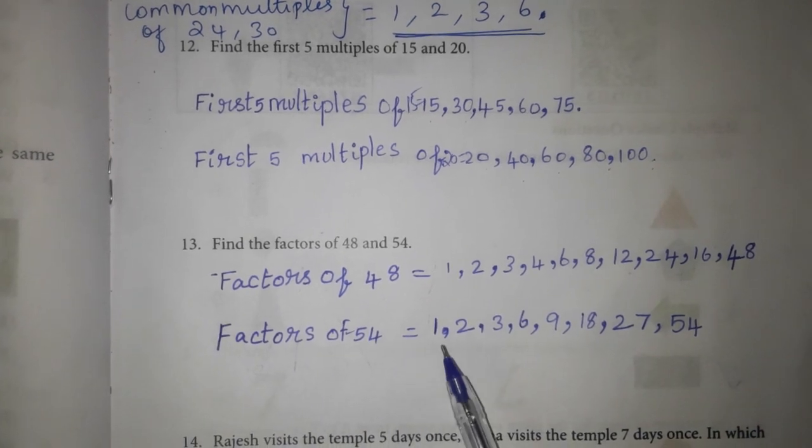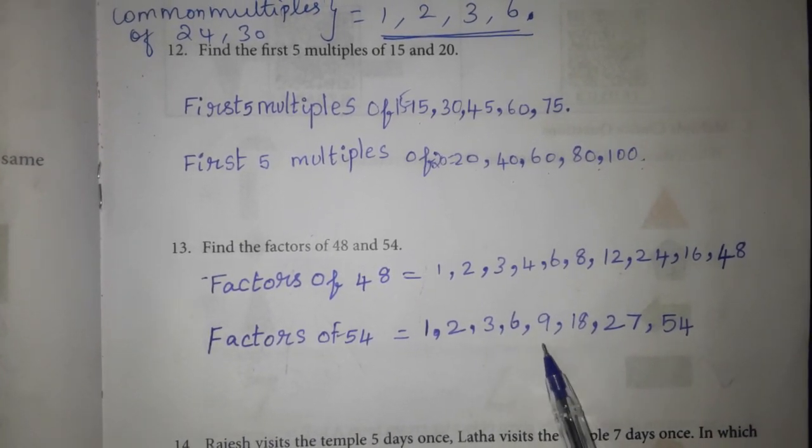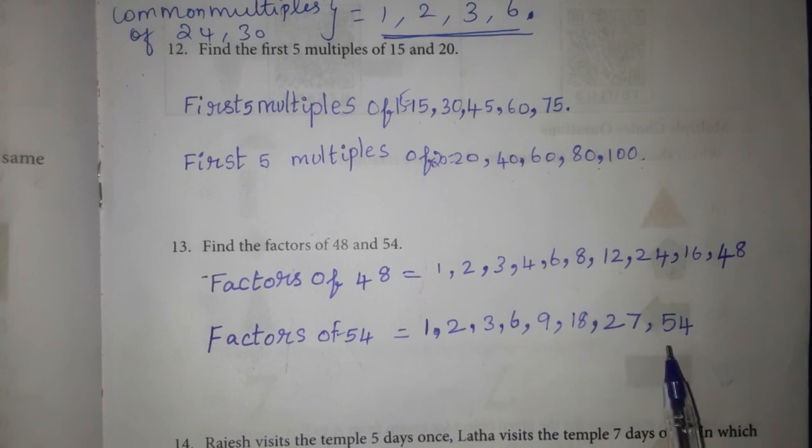Factors of 54. 1, 2, 3, 6, 9, 18, 27 and 54.